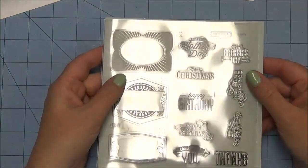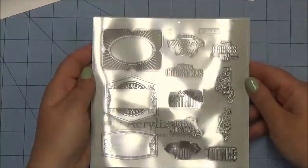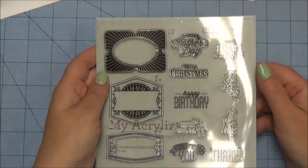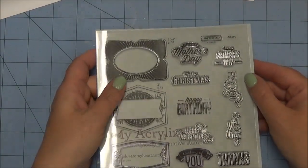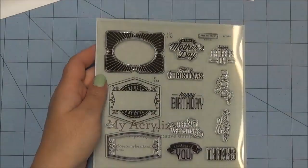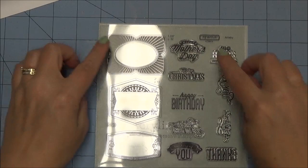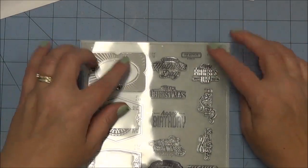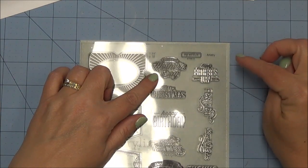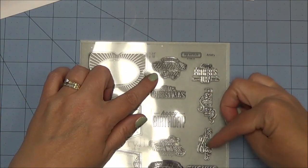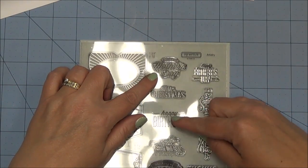I'm using the August stamp of the month, the frame set that you can get if you purchase any $50 order from Close To My Heart for just $5. This is such a versatile stamp set with three different frames and several different sayings: simple greetings, happy Mother's Day, happy Father's Day, for you, best wishes, sorry, thanks, thinking of you, happy Valentine's, happy birthday, and merry Christmas.